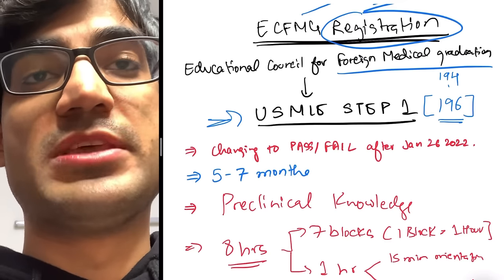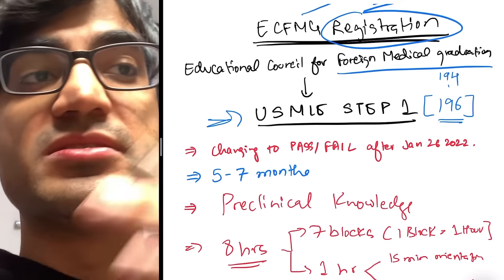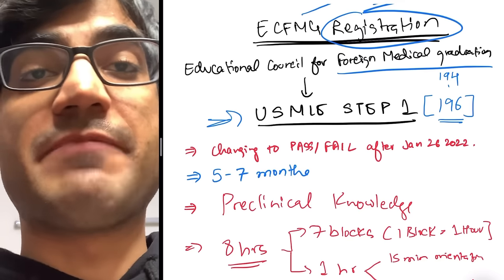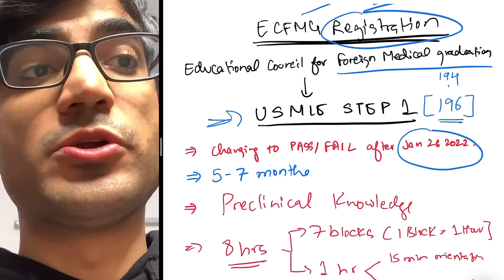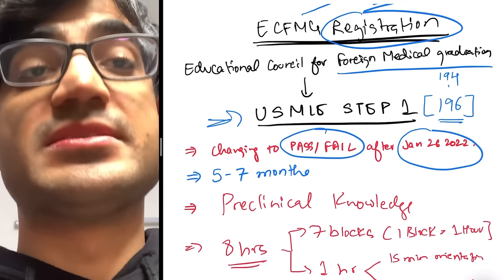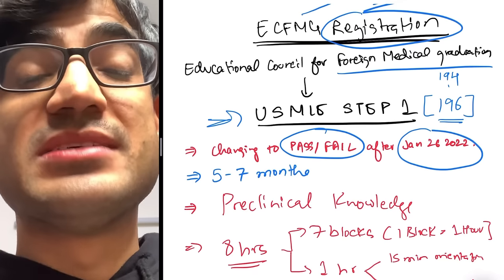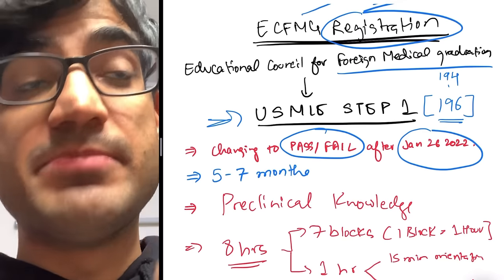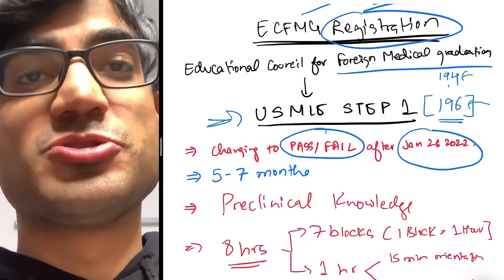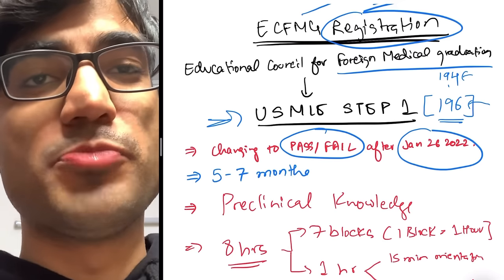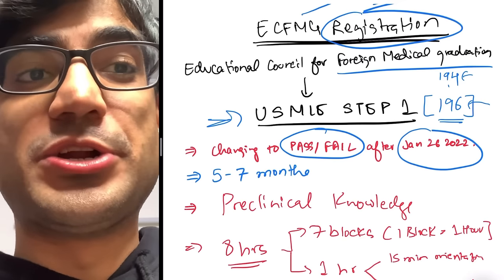USMLE Step 1 used to have a three-digit numerical score. But starting January 26, 2022, it changed to a pass/fail system. The USMLE also announced they are changing the minimum passing score from 194 to 196, making it slightly harder to pass. Not that much of a difference, but it is a change you need to be aware of.